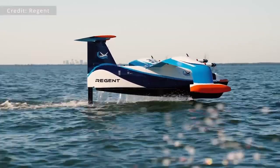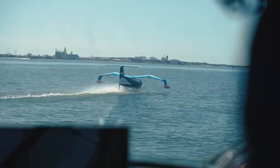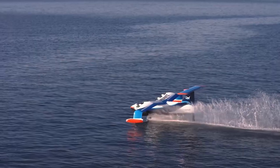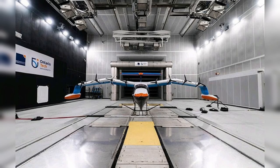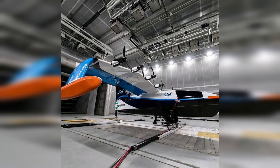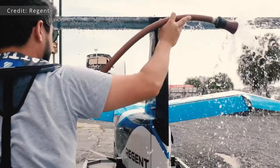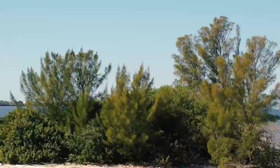Regent, who are making the sea gliders, are now testing their quarter-scale model called Squire in the wind tunnel, before taking it back to the water in the coming weeks for the final push towards flight. They also moved their headquarters to Rhode Island for various reasons — one being a substantial economic incentive package, and the other being the location for testing, closeness to a suitable testing area, and access to talent.